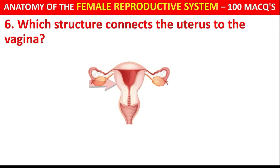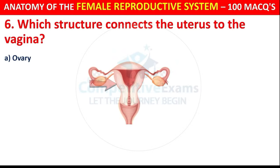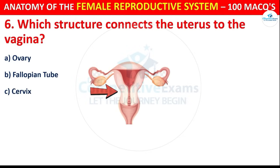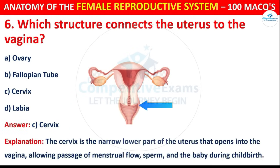Question number 6: Which structure connects the uterus to the vagina? Options are: Ovary, Fallopian Tube, Cervix, or Labia. The correct answer is C, i.e. Cervix. The cervix is the narrow lower part of the uterus that opens into the vagina,